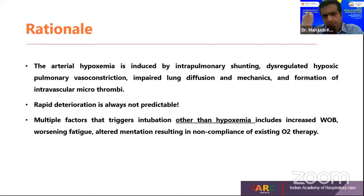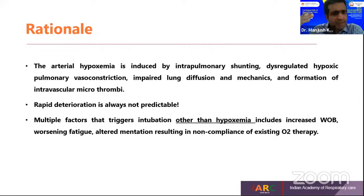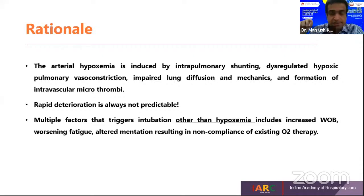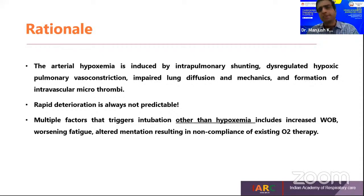Why do we want to intubate? Number one: arterial hypoxemia, induced by intrapulmonary shunting, considering that these patients present with pulmonary fibrosis, dysregulated hypoxic pulmonary vasoconstriction, impaired lung diffusion and mechanics, and formation of intravascular microthrombi secondary to endothelial problems, DIC, and coagulation dysregulation. Rapid deterioration is not always predictable — multiple factors trigger intubation including worsening fatigue, increased work of breathing, and altered mentation.